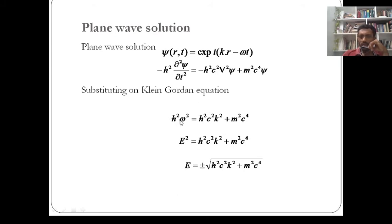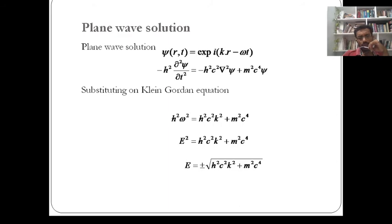When we substitute the plane wave solution into the Klein-Gordon equation, we get ℏ²ω² = ℏ²c²k² + m²c⁴. Now, ℏω is the energy (since ℏω = h·ν = E). So we can write E² = ℏ²c²k² + m²c⁴, and therefore E = ±√(ℏ²c²k² + m²c⁴).